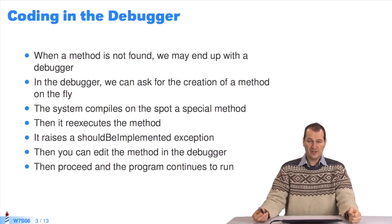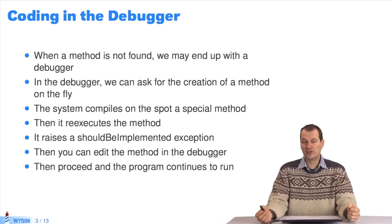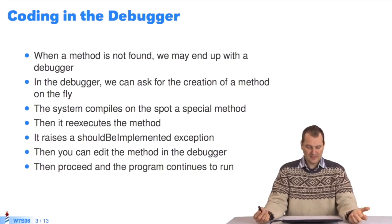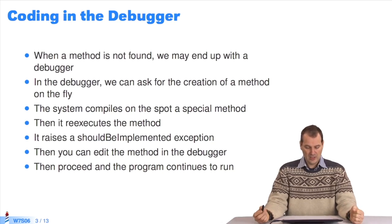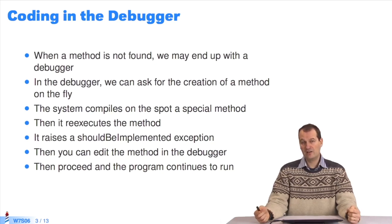So we'll use a scenario that is already in your debugger. Here, a message you sent is not found because you didn't define it while you execute a unitary test. In the debugger, you answer that you want to create a method. It compiles and installs it in the class. Then it re-executes it. This method raises an exception since the system is not magic.